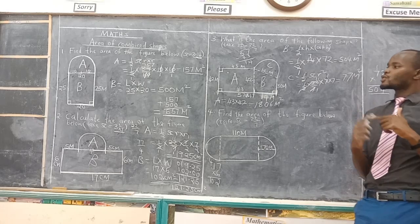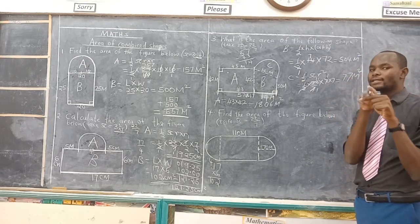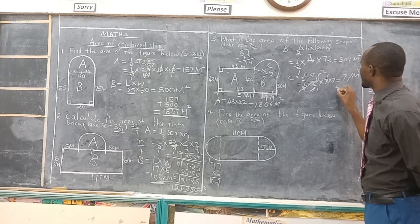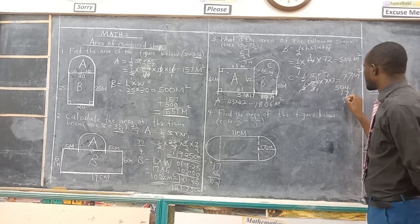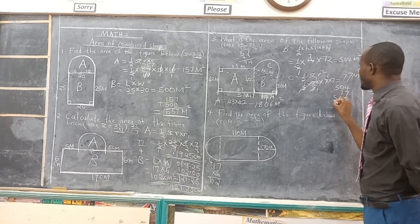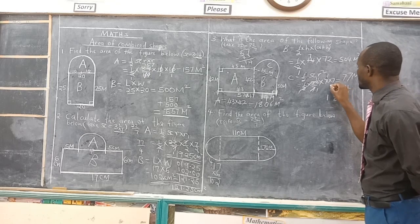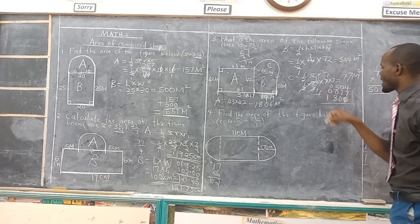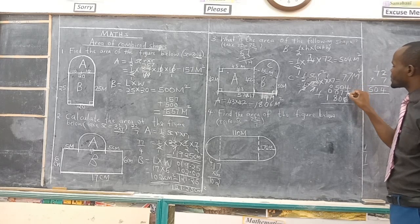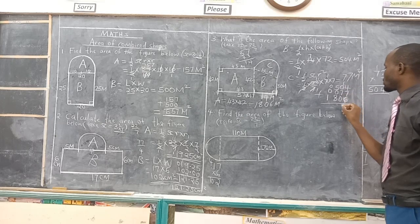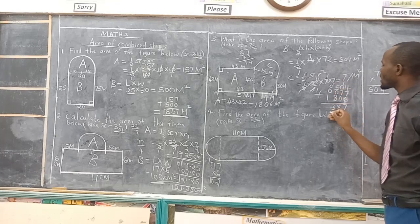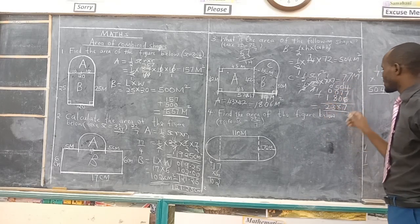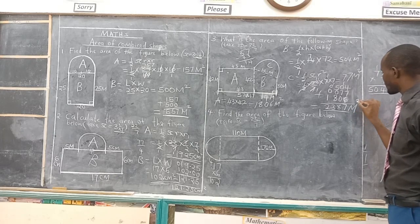That is the area of each of the shapes. Now you calculate the area of the combined shape — you add all of them. We have 1806 plus 504 plus 77. Adding: 6 plus 4 plus 7 is 17, carry 1. 0 plus 0 plus 7 plus 1 is 8. 8 plus 5 is 13, carry 1. 1 plus 1 is 2. So that becomes the area of the combined shape — 2387 meters squared.